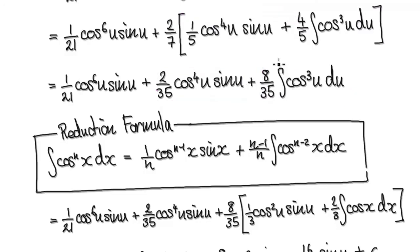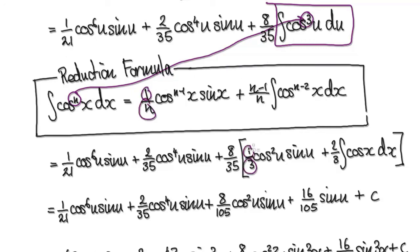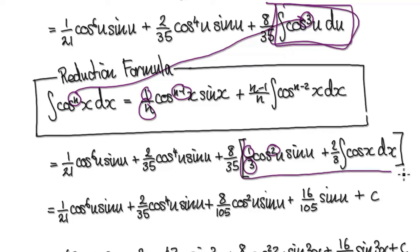So now use the reduction formula again on this. Using the reduction formula, this time n would be 3. So using the reduction formula, it would be 1 over 3, and then 3 take away 1, that would be 2, and then so on. So using the reduction formula, this whole thing here would then become this.